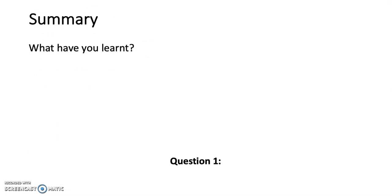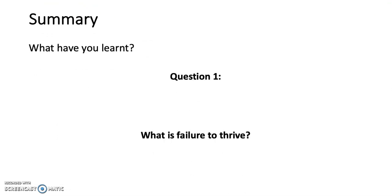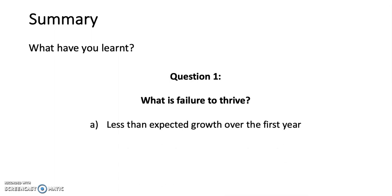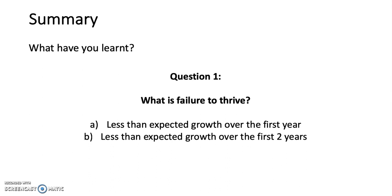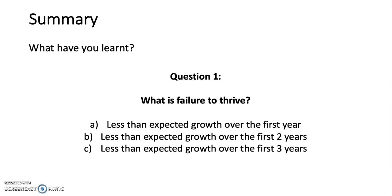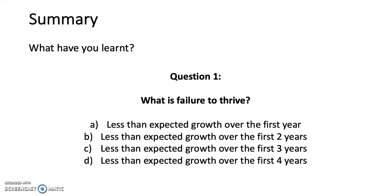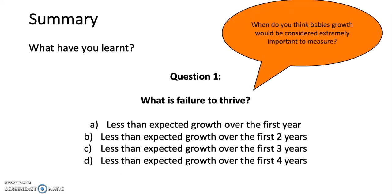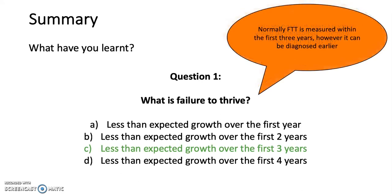Let's go back over the questions to see what we've learned. Question 1: What is failure to thrive? a) Less than expected growth over the first year, b) over the first two years, c) over the first three years, or d) over the first four years. The answer is c) over the first three years.